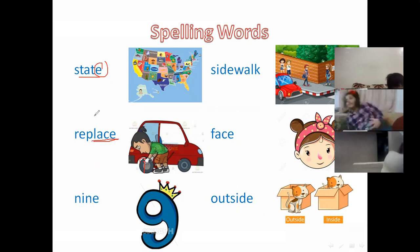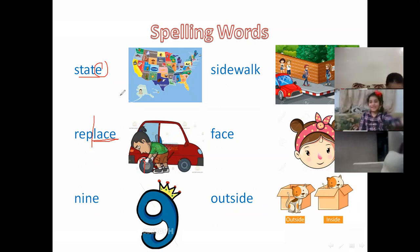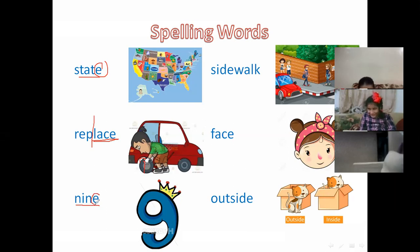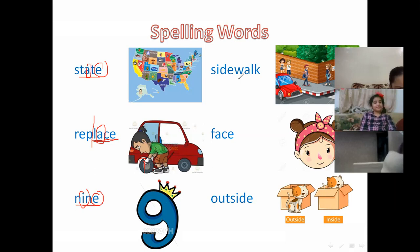In 'replace,' listen to the second syllable — we have a long vowel sound. The word 'nine' follows consonant-vowel-consonant-final E, so we have a long I sound. 'Lease' has a long vowel sound. 'Sidewalk' — here we have 'side,' which has the long I sound because we have consonant-vowel-consonant and final E.